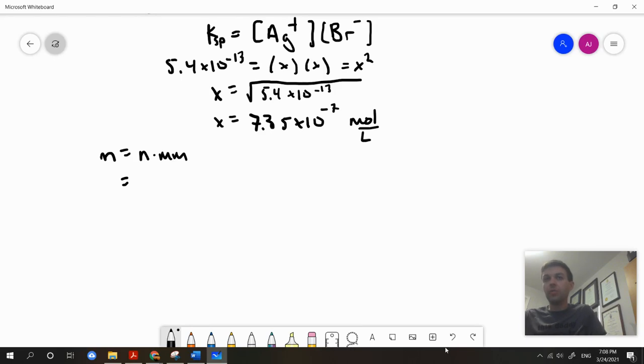First, I want to convert this amount in moles to a mass in grams. Mass equals moles times molar mass. We're talking about the solute here, so that's going to be silver bromide. Let's solve for mass.